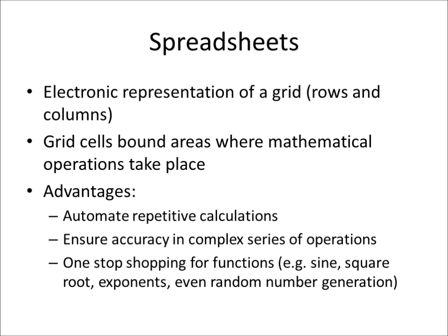Spreadsheets — and Excel specifically — are an electronic representation of a grid with rows and columns. The grid cells, delineated by rows and columns, are areas where mathematical operations can take place. One big advantage is that we can automate repetitive calculations, which is very important in eco-hydrology. We can also ensure accuracy in a complex series of operations, like the multi-step Burning Man nitrogen problem, checking each step individually to confirm it outputs the correct portion of the answer.